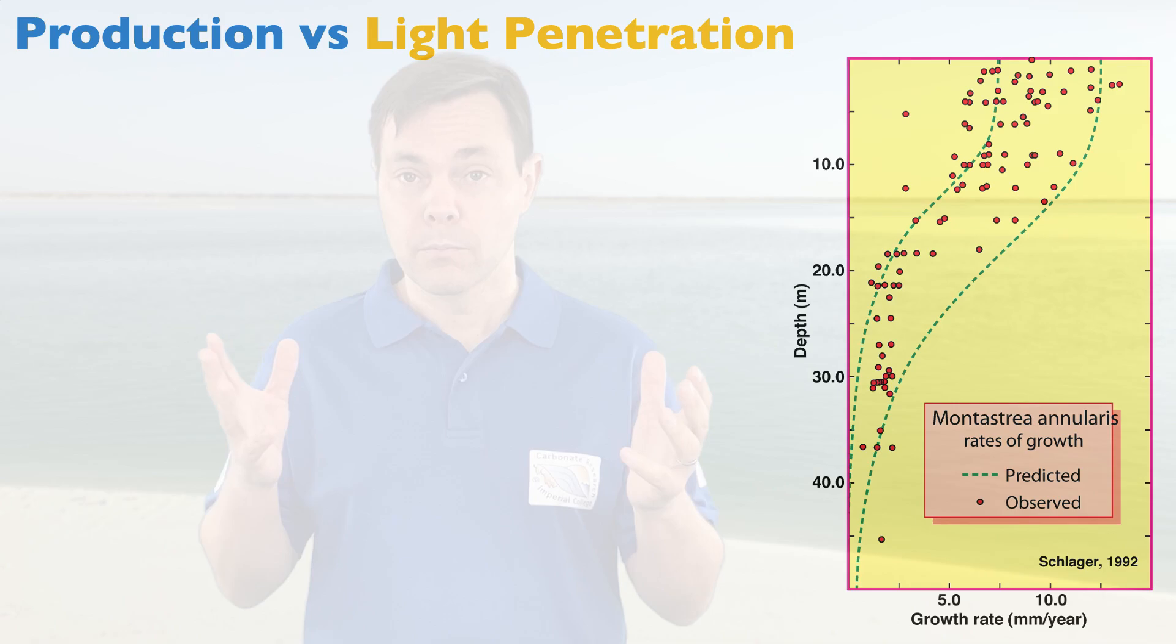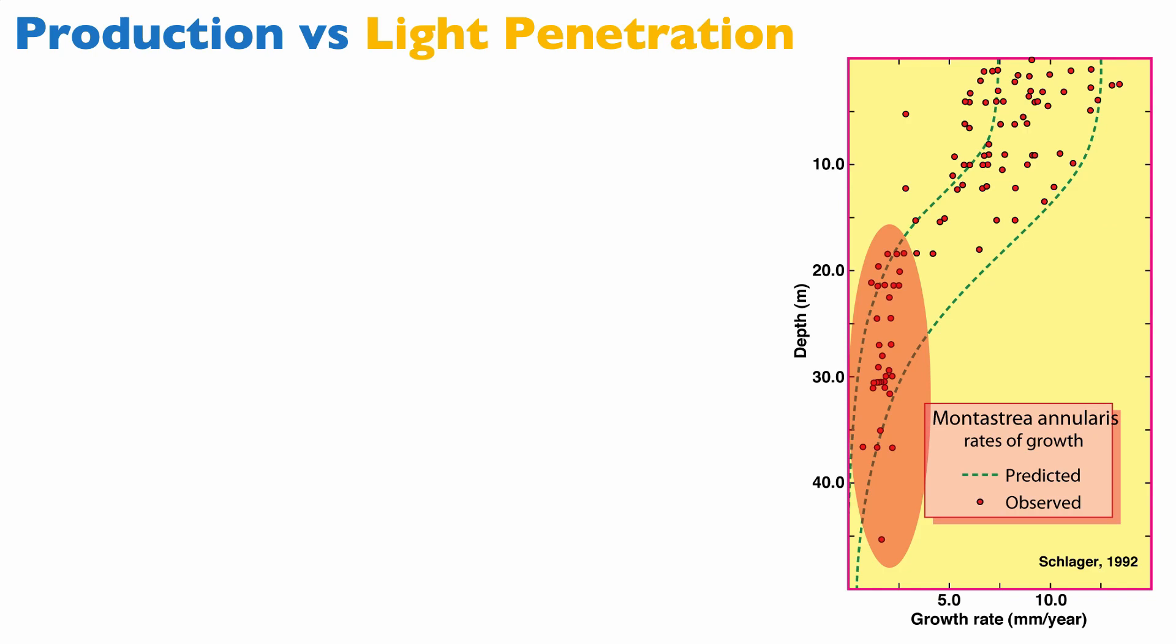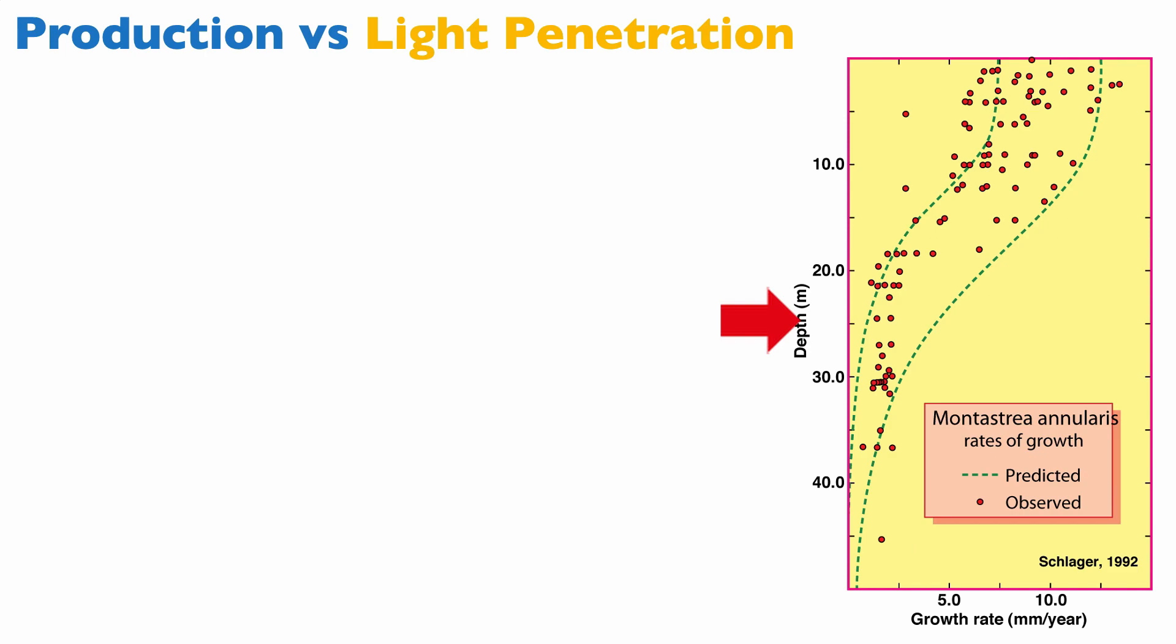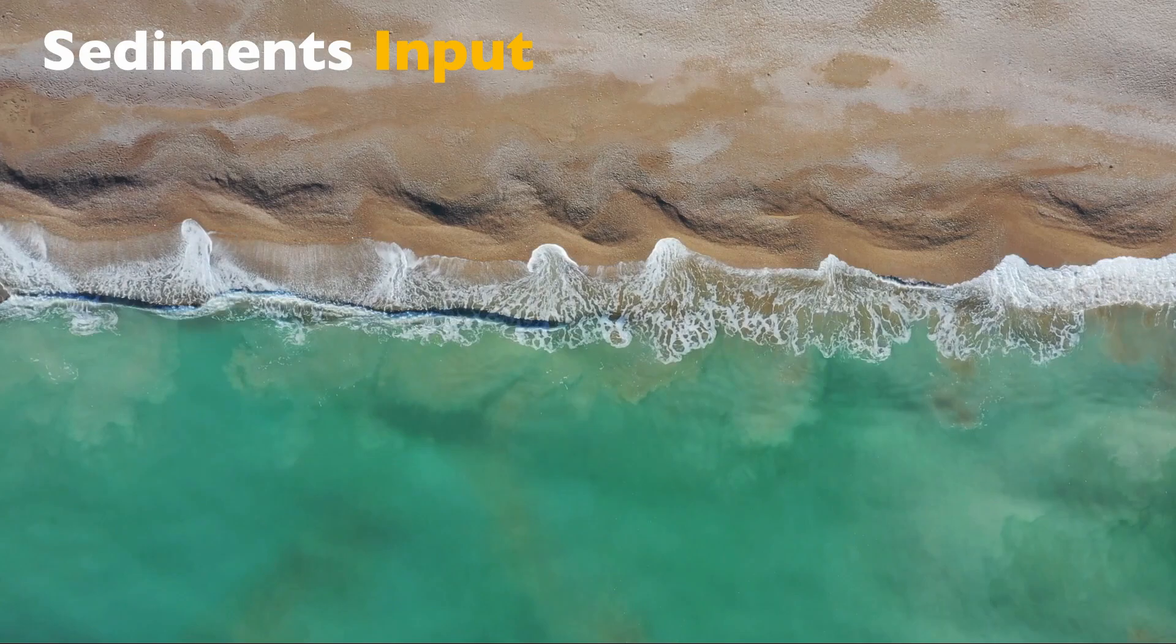And you can see that the maximum production of that coral in the Bahamas happens in the first 10 meters of the water column. So really shallow water conditions are favorable to autotroph carbonate production, and that means they're favorable to T factory settings. And then we have a net decrease of that growth, and already at 25 meters there is almost no growth. The growth is so reduced that these corals effectively will die eventually.